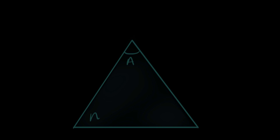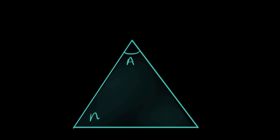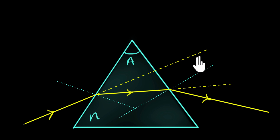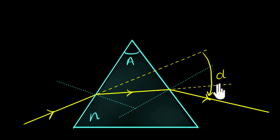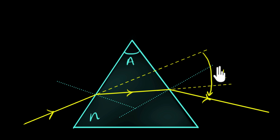In a previous video, we saw that when you take a prism and shoot a ray of light, the ray of light undergoes a deviation. This deviation has a minimum value. In this video, we're going to figure out exactly what that minimum value of this deviation is.